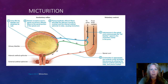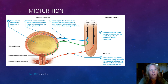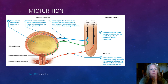By the time the filtrate empties out of the collection duct, we call it urine. It moves to the pelvis of the kidney, which funnels it down the ureter to the bladder. The urinary bladder is a hollow, distensible organ found in the pelvic cavity floor, held in place by the parietal peritoneum. It collapses when empty but becomes pear-shaped when full, holding about 700 to 800 milliliters of urine in males and slightly less in females.